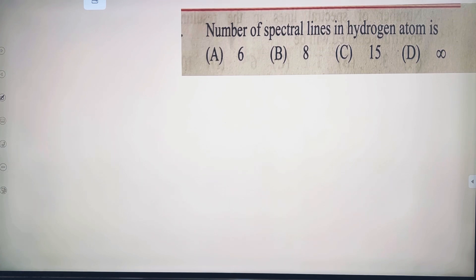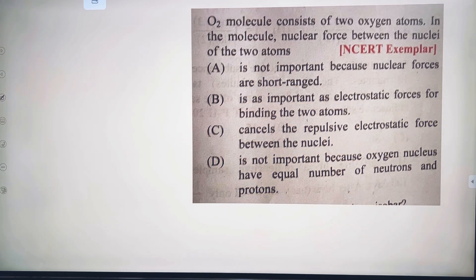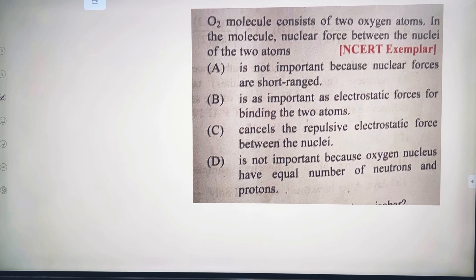Number of spectral lines in hydrogen atom - using the energy band diagram from n equals zero to infinity, the formula gives infinity, option D. Next: O₂ molecules consist of two oxygen atoms. The nuclear force between the nuclei of two atoms is not important because nuclear force is a short range force. Option A.